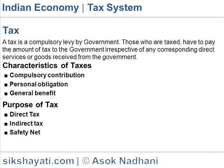General Benefit — taxes collected by the government are spent for the general welfare of the people. Tax is the major source of revenue for administration of the government.